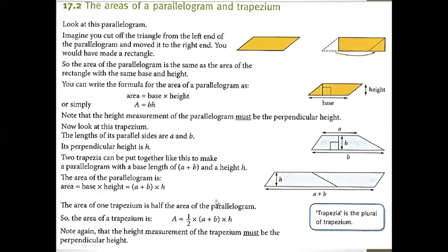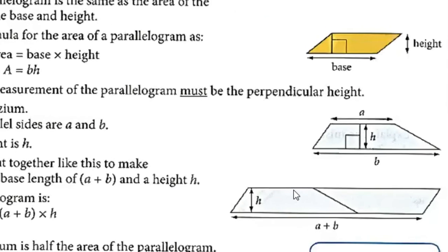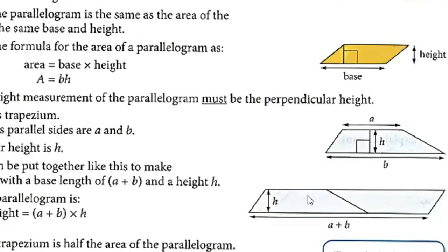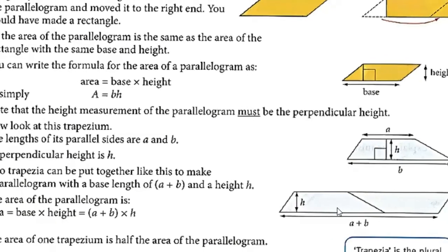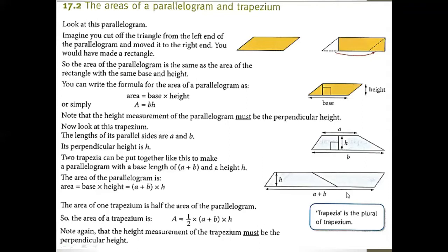Now let's talk about Trapezium. What is a Trapezium? It's a different shape. This base is bigger than this base. But if we put two Trapeziums together — one like this and the other the opposite — we can easily make a Parallelogram. So it means we multiply base by height, but we are putting one extra.